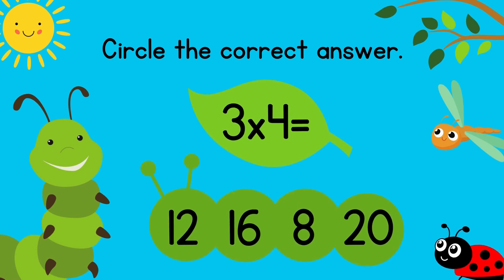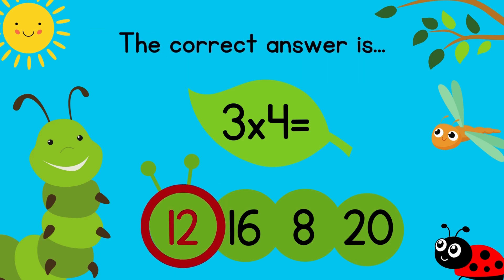Circle the correct answer. 3 times 4 equals? The correct answer is 12. Excellent!